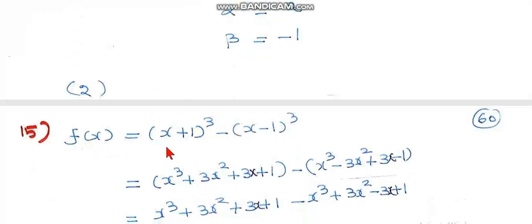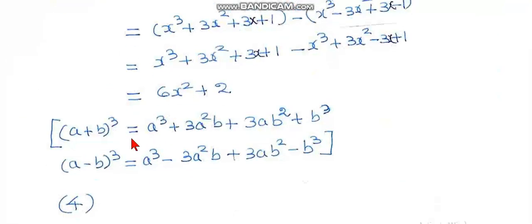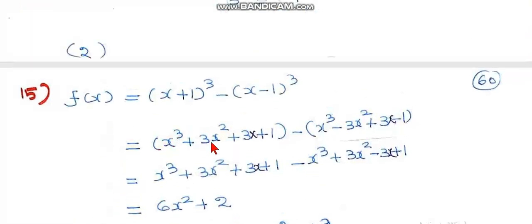f(x) = (x+1)³ − (x−1)³. It represents a linear, cubic, reciprocal, or quadratic function — which choice is correct? Expanding using the binomial formula: (x+1)³ = x³ + 3x² + 3x + 1, and (x−1)³ = x³ − 3x² + 3x − 1.